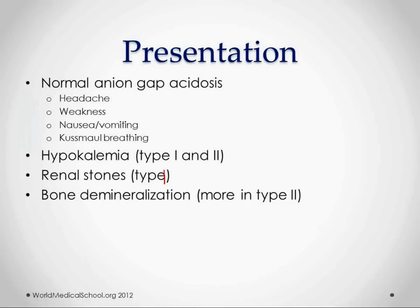How are these patients going to present? The symptoms are pretty nonspecific — headache, nausea, vomiting. They're just going to come in sick. Things to watch out for include Kussmaul breathing, which we usually associate with DKA — these are just really deep breaths. All the symptoms of hypokalemia we'll see in type 1 and type 2. Renal stones are seen more often in type 1. Bone demineralization — like rickets and osteomalacia — is more associated with type 2 but you see it in type 1 as well with chronic renal tubular acidosis.